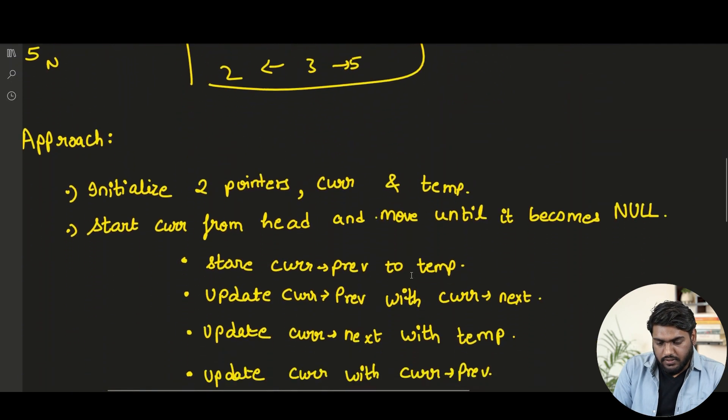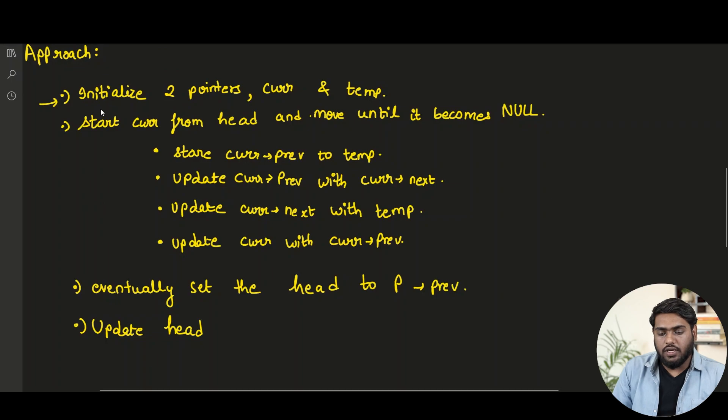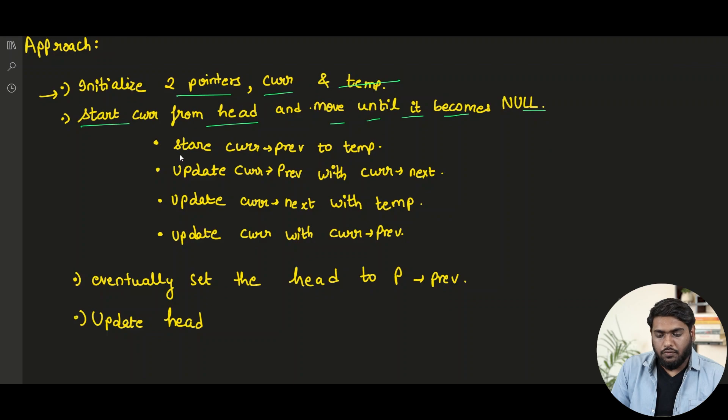And swapping is quite easy. We just have to have one temporary there and we can swap these two values. And that would be it. And we have to do this for each and every node. That means we need to traverse it once from here till the last. And at every node, we need to do the swapping. Let's see the approach for the same. So as we can see here, we just have to initialize two pointers. First is current to just keep a track of on which node we are actually performing the swapping and then temporary just for helping us to swap two pointers.